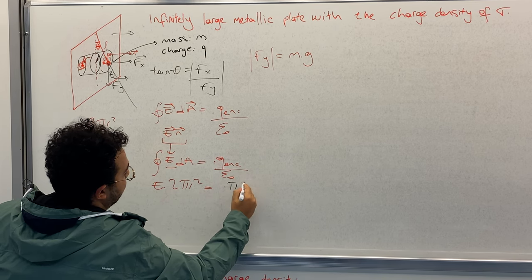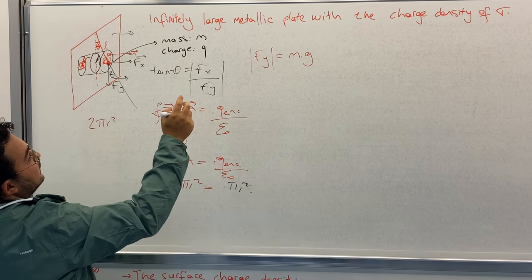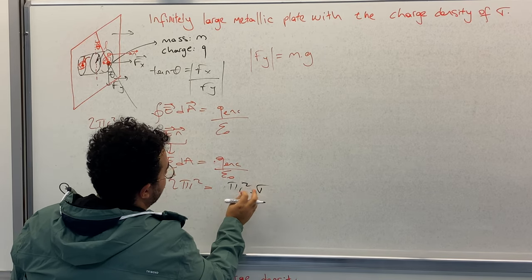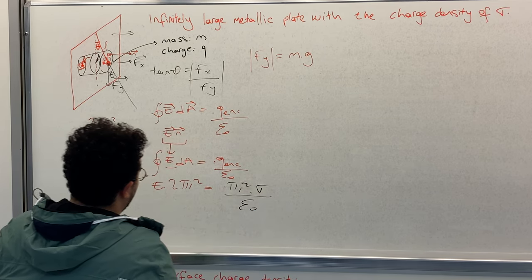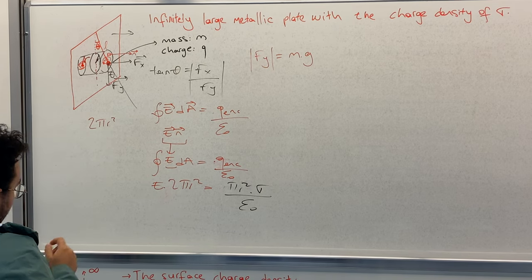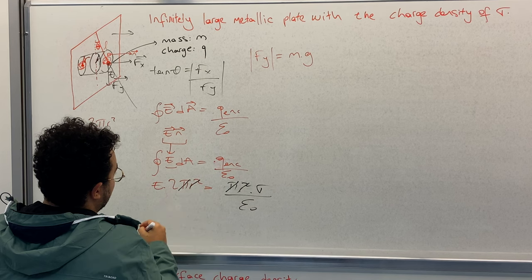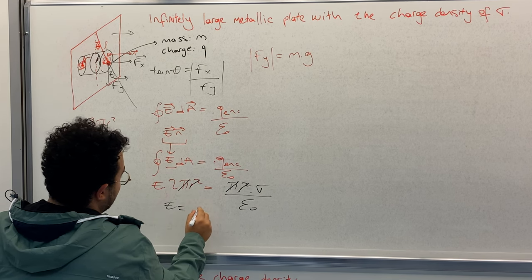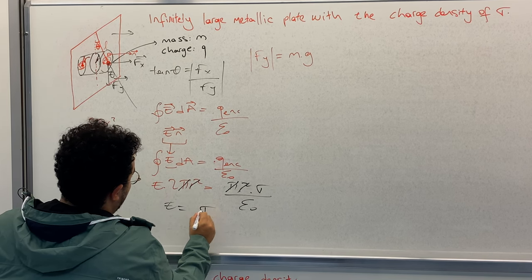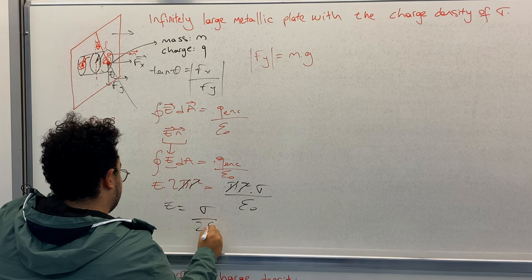2πr² equals to Q enclosed, which will be calculated as we have this intersection, so the area is πr² times the surface charge density σ, divided by epsilon zero. So π goes, r² goes, electric field equals to σ over 2ε₀.